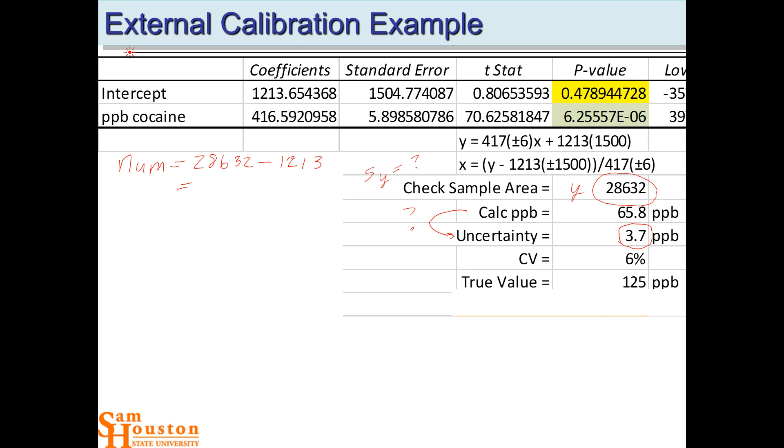We're calculating the uncertainty for these values and just showing again the propagation of uncertainty and how it's calculated. We're calculating the uncertainty in the numerator because we need that to calculate the uncertainty for this division.